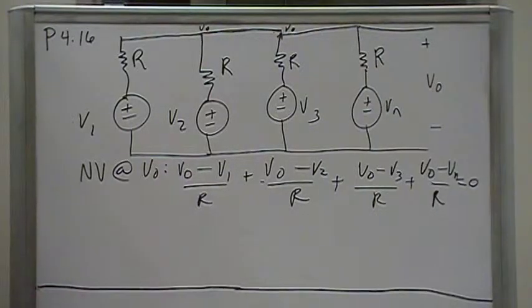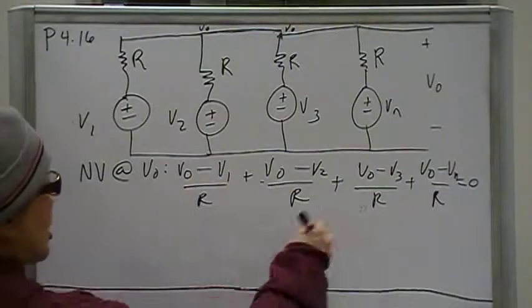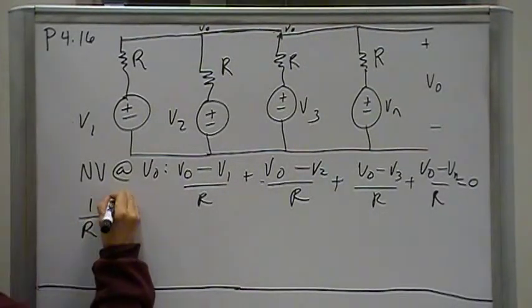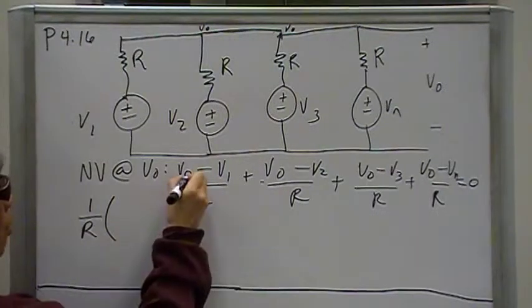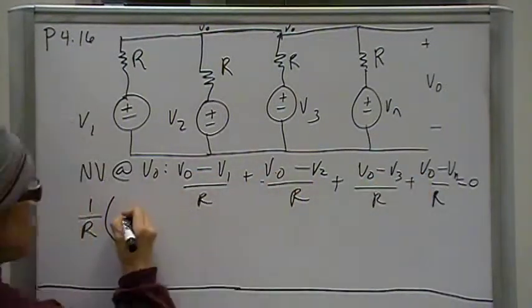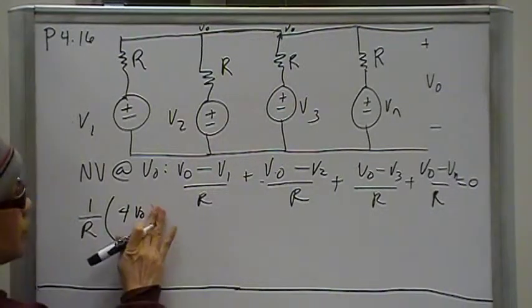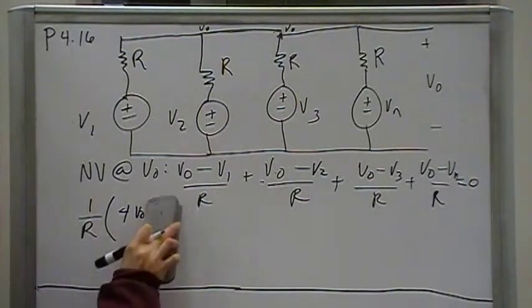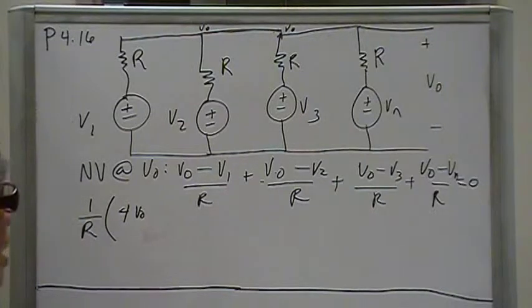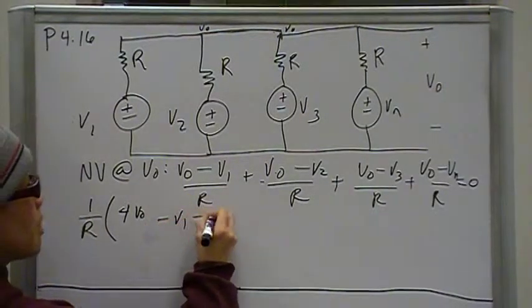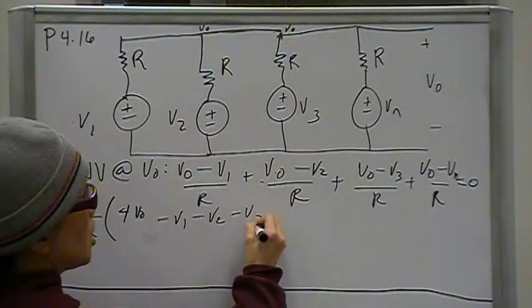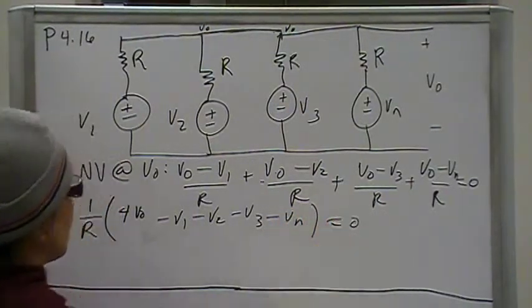We have V over R, voltage divided by resistance is current. So, this is all the same R, I can factor that out. So, that leaves me with one, two, three, four Vouts. And, then I have minus V1, minus V2, minus V3, minus VN. All that equals zero.